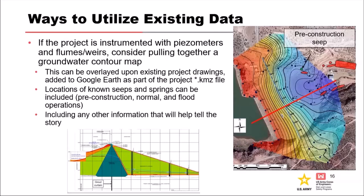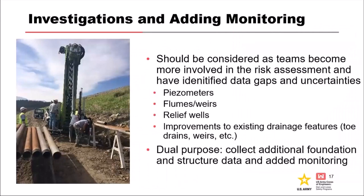This picture is at Trinidad Dam in southeastern Colorado, where all instrumentation failed — every single piezometer was sheared and there was only one inclinometer on the project. As the team becomes more familiar with project data and begins working through the PFMA and SQRA, data gaps and uncertainties should be documented. These verified data gaps and uncertainties will cover more than just site characterization — they will span multiple disciplines and feed the risk assessment in different ways.